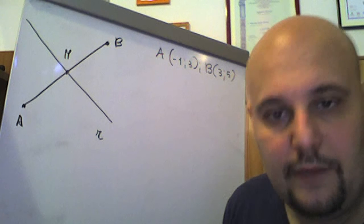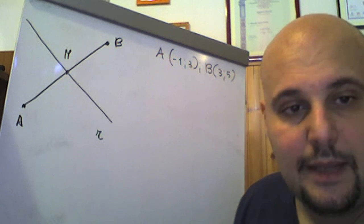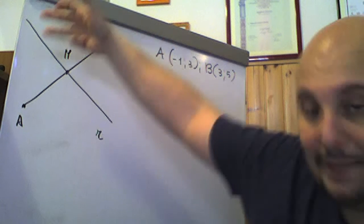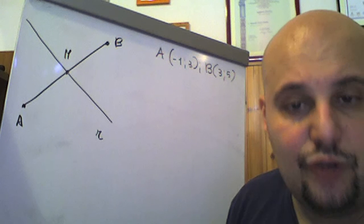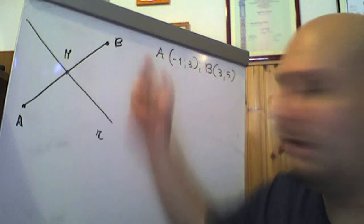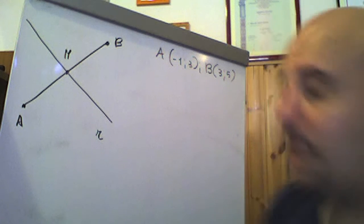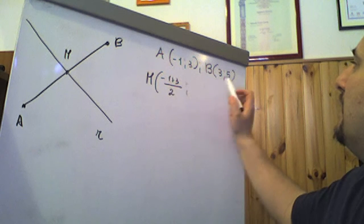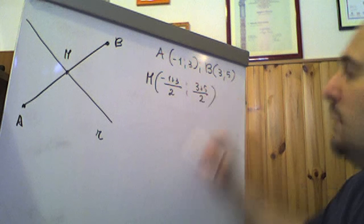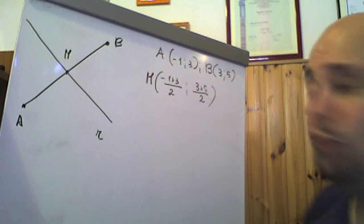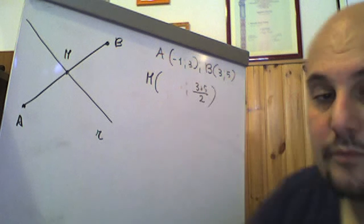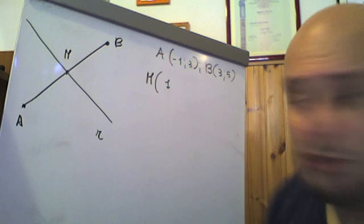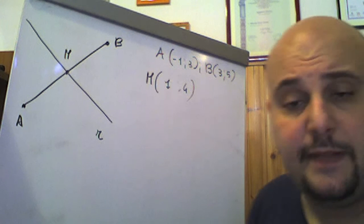Dobbiamo scrivere l'equazione della retta R passante per M, perché l'asse del segmento è proprio la retta perpendicolare alla retta contenente il segmento AB passante per il punto medio M. Per prima cosa dobbiamo determinare il punto medio M. M sarà: ((-1+3)/2, (3+5)/2) = (2/2, 8/2) = (1, 4). Queste sono le coordinate del punto medio del segmento AB.